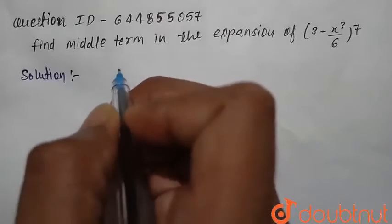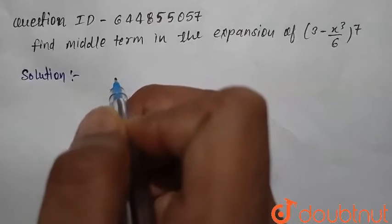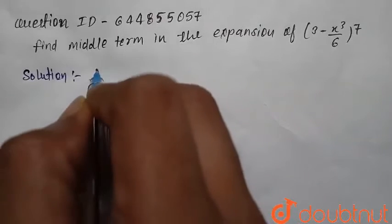Find the middle term in the expansion of (3 minus x-cubed divided by 6) raised to the power 7.